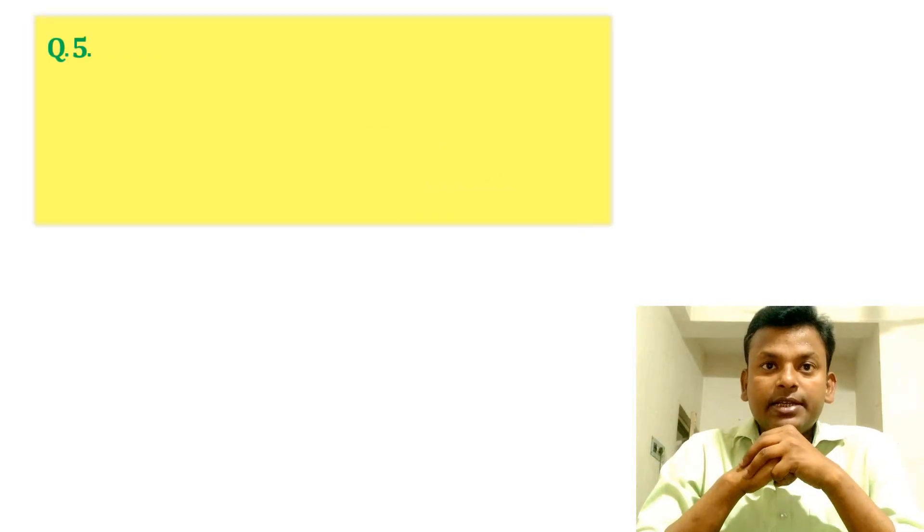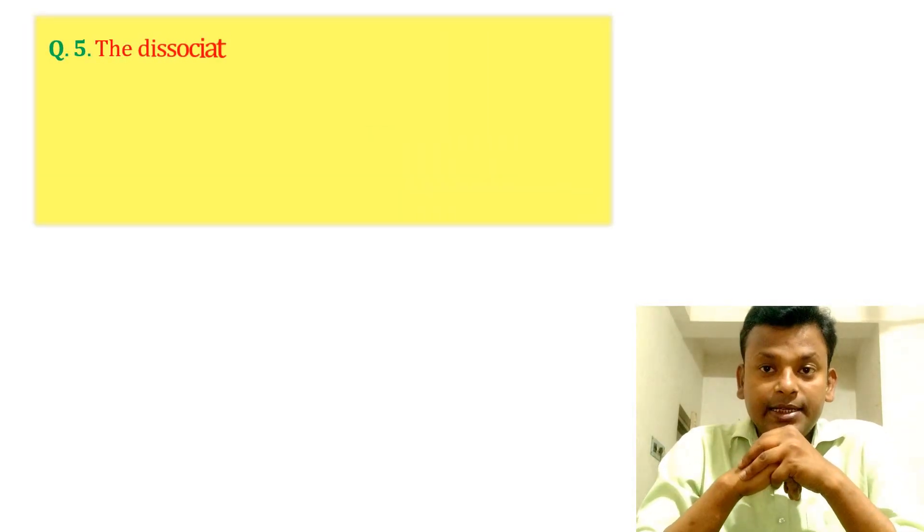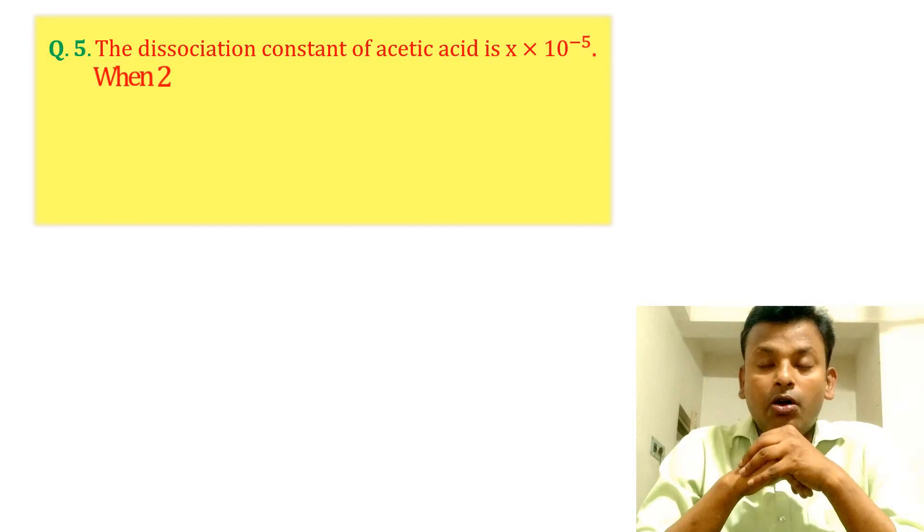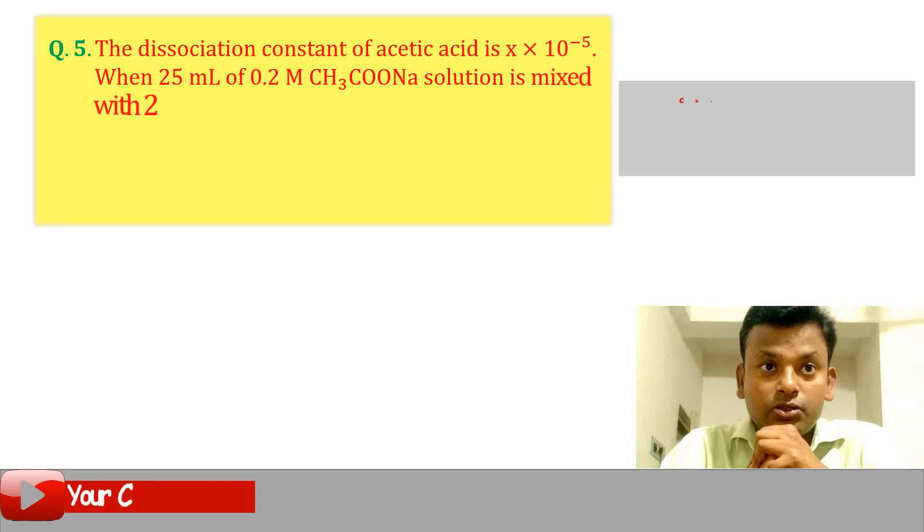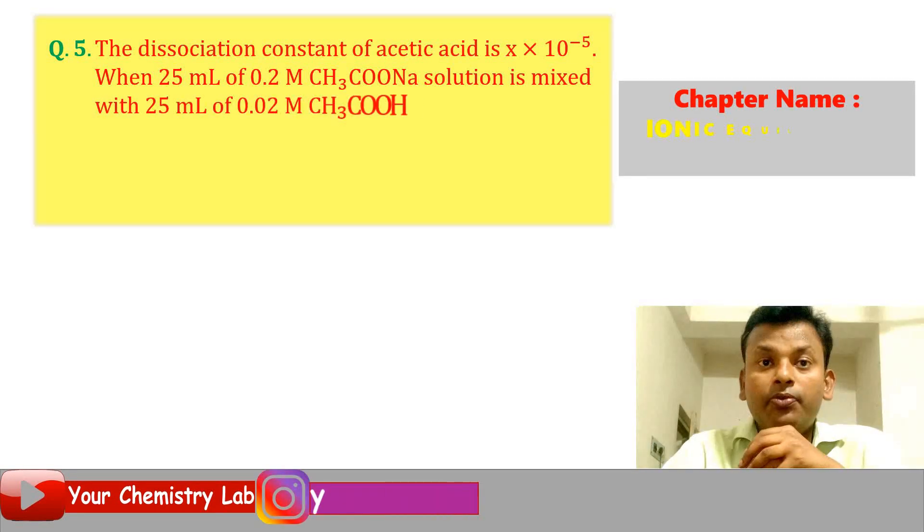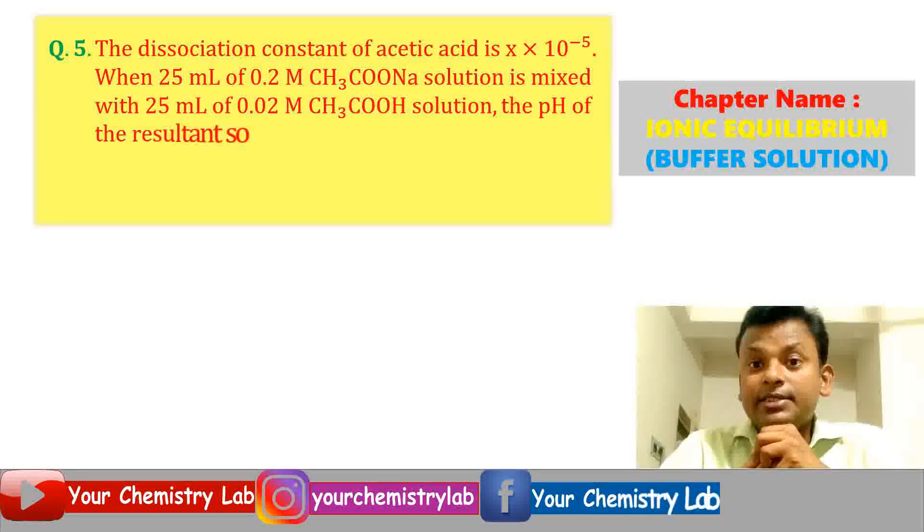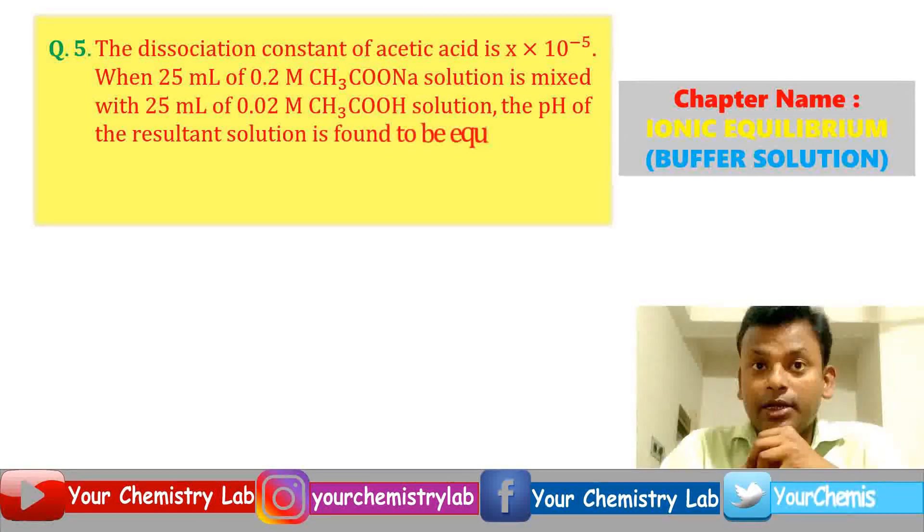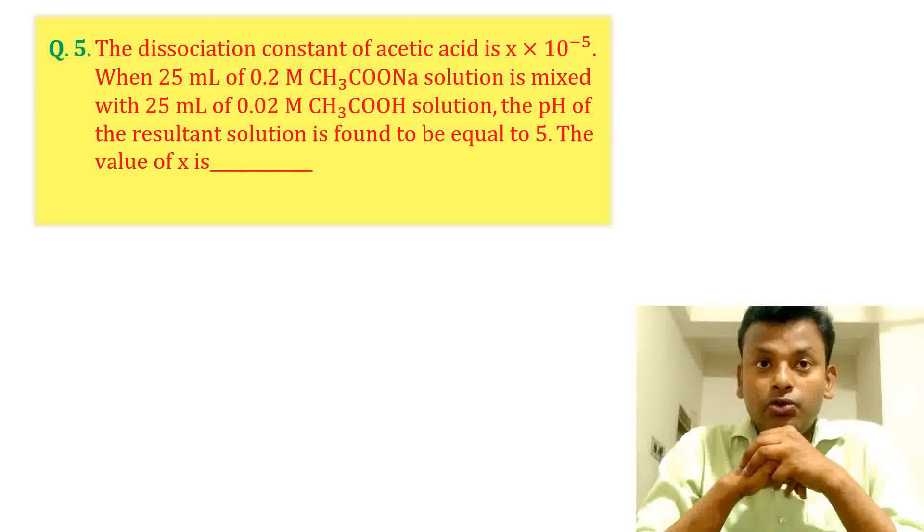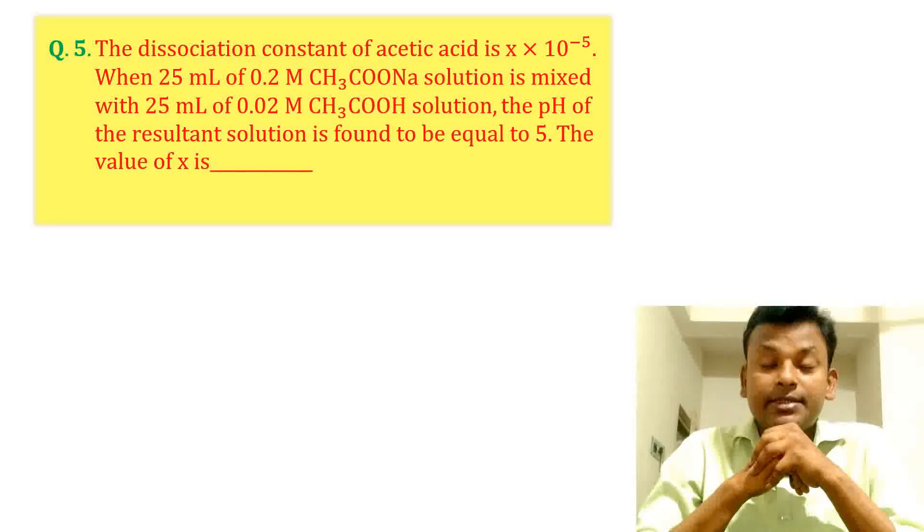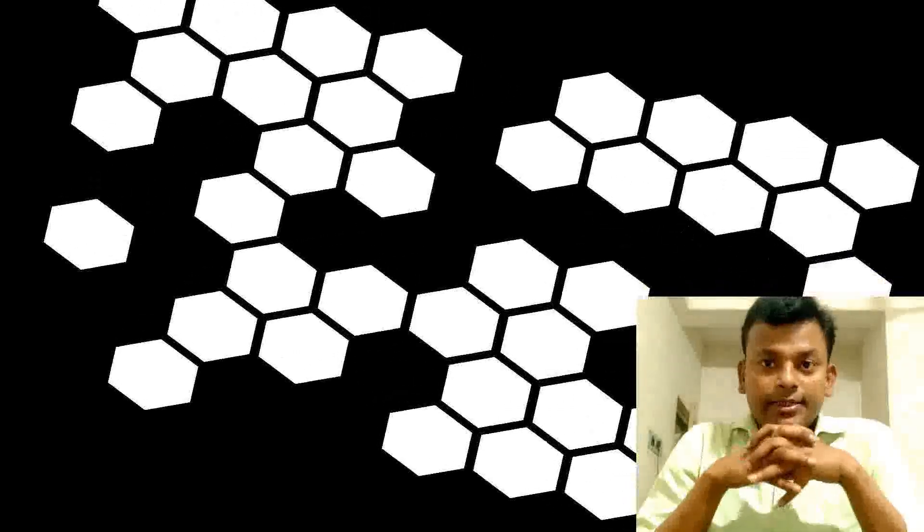Question 5: The dissociation constant of acetic acid is x into 10 to the power minus 5. When 25 ml of 0.2 molar CH3COOH solution is mixed with 25 ml of 0.02 molar CH3COONa solution, the pH of the resultant solution is found to be equal to 5. The value of x is?